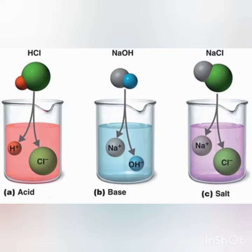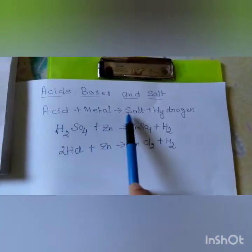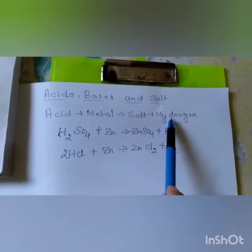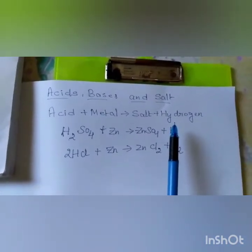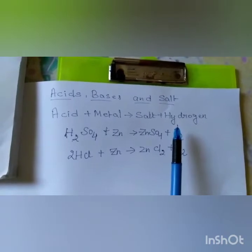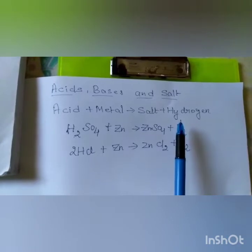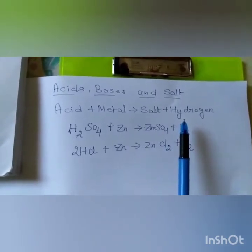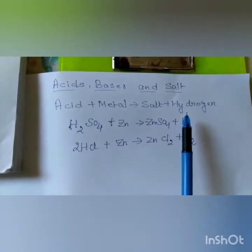Now we will study the reaction of acids on metals — how the acids react with metals. Acids react with metals to give salt and hydrogen. In activity 2.3 on page 19, the test tube is fixed with a clamp stand and on the other side a glass vessel contains soap solution.